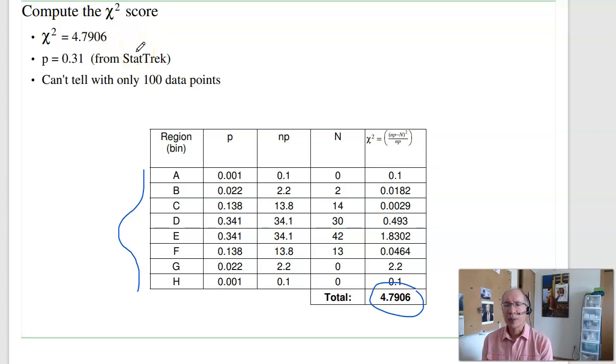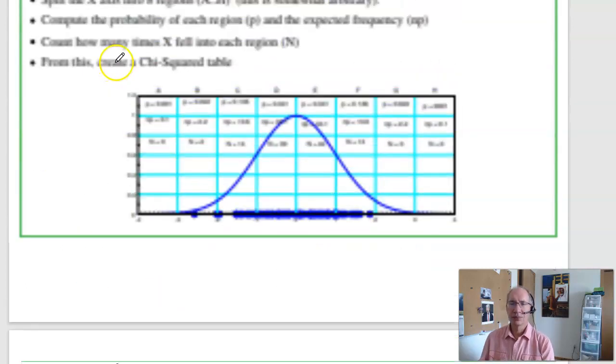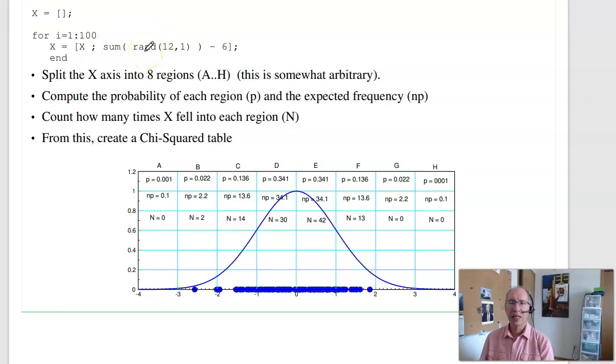Convert that to a probability using stat track. I've got eight bins, meaning seven degrees of freedom. That corresponds to a probability of 0.31. So 31%, again, that's a typical number. It's not real small, saying I didn't fudge the data. It's not real big, saying I can reject the null hypothesis, meaning it's not a normal distribution. Somewhere in the middle, no conclusion. So with 100 data points, I can't tell the difference between this function and an actual normal distribution.